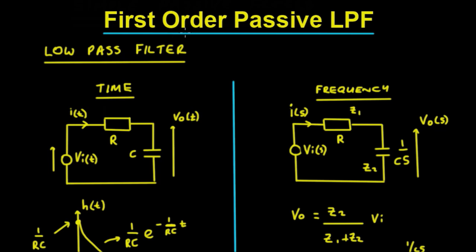So let's have a look at the first order passive low pass filter. It's passive because there's no gain involved in it. We've seen this circuit before a couple of times.